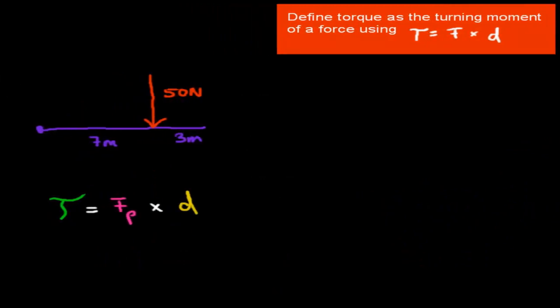So I'll give you two examples. So this is maybe a calculation you get. Here is our pivot. And this is given. It's got seven meters here and three meters here and 50 newtons here. And we need to do calculations.